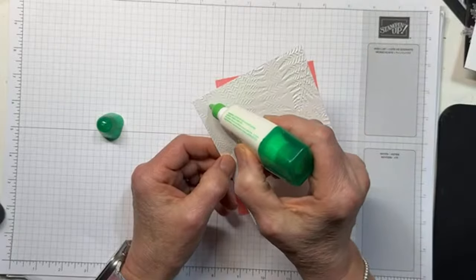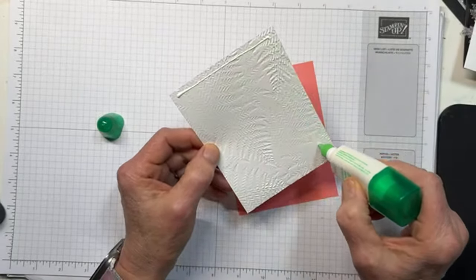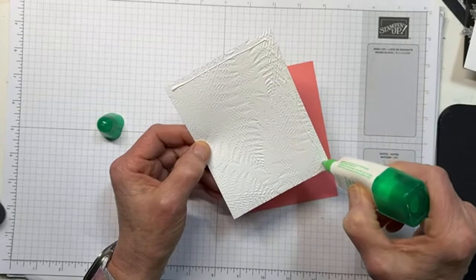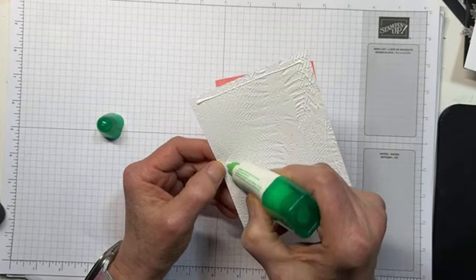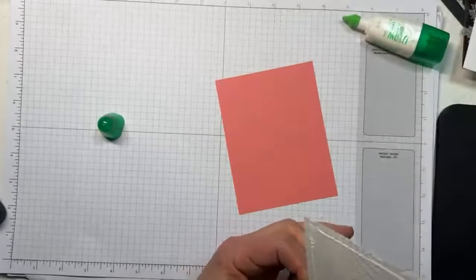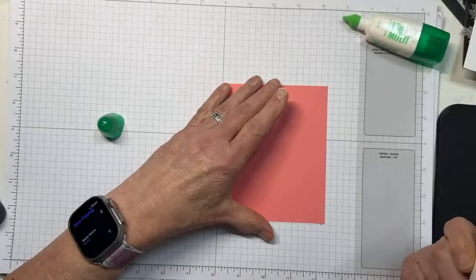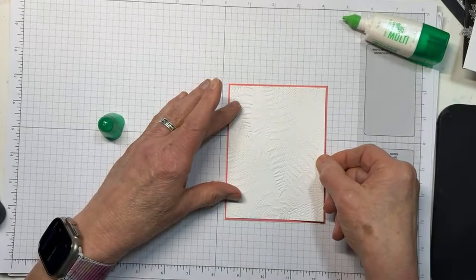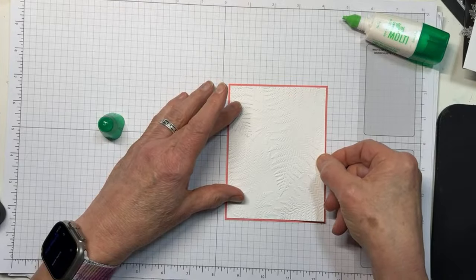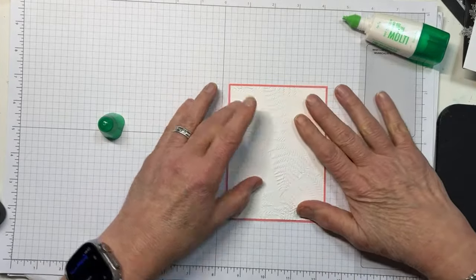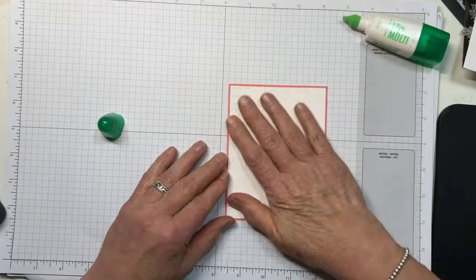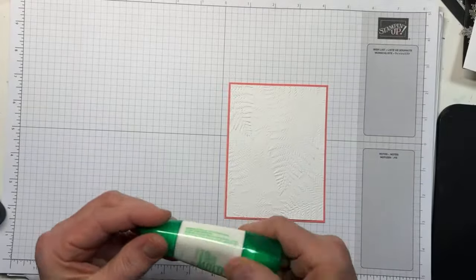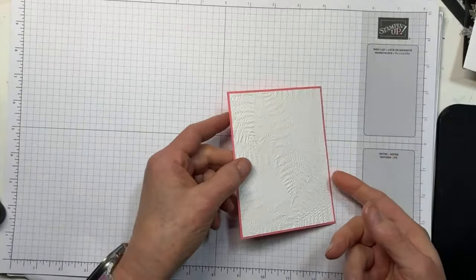So we're going to just adhere this with some liquid glue to a Flirty Flamingo mat. I'm playing with the color challenge from the Global Design Project, and that was Flirty Flamingo, Daffodil Delight, and Pumpkin Pie. Now I know you probably didn't immediately think wild ferns when you saw that color combination, but it turns out that it works pretty darn good.